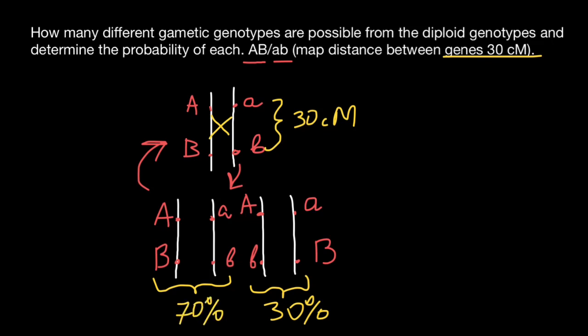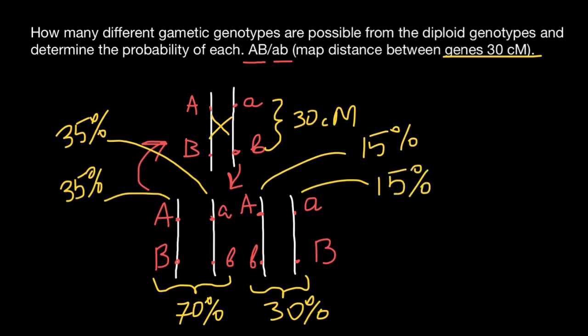We also say this is going to be parental variants. And the frequency of each variant would be this one, 35%. So half of the 70%, this variant would also make 35%. This variant would make half of 30% would be 15%. And this variant also would make 15%.